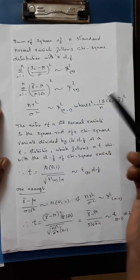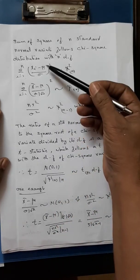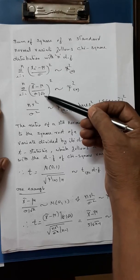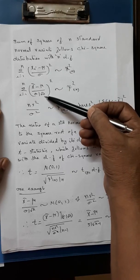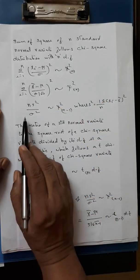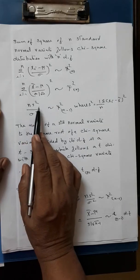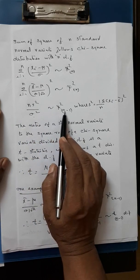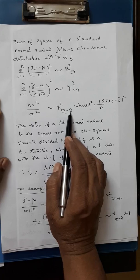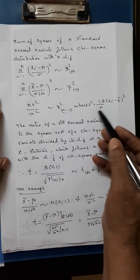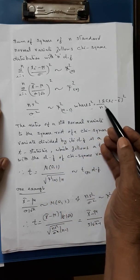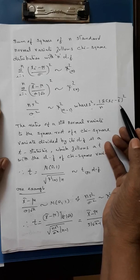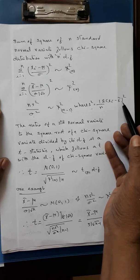However, this doesn't mean these two expressions are equal to each other. We also know that n times s-squared by sigma-squared equals sigma (xi minus x-bar) whole square.